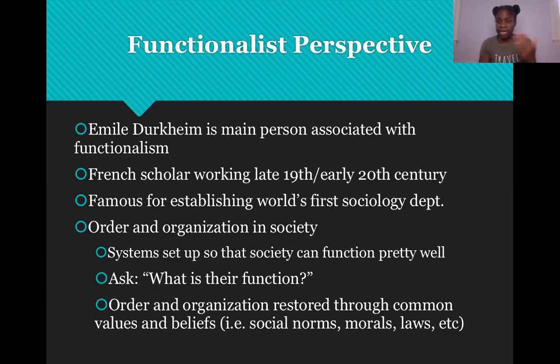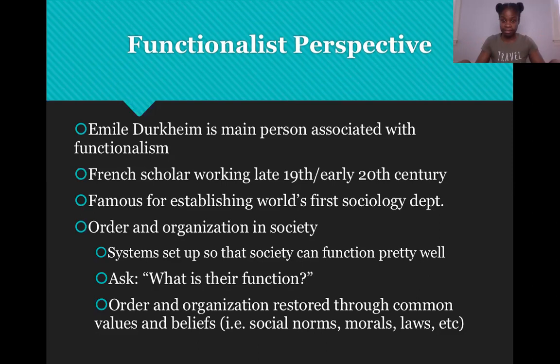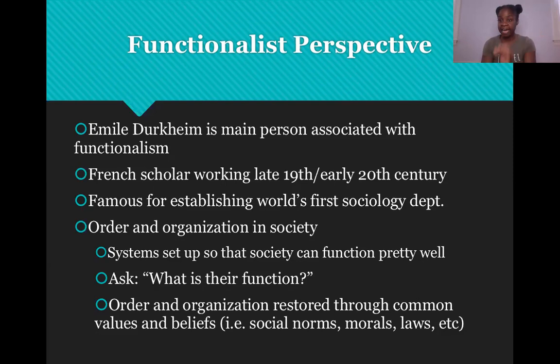When I say systems, I'm talking about educational systems, family systems, religious systems, and state systems — meaning policies and laws. These things keep society ordered and organized. Order and organization is restored through common values and beliefs. Because people are flawed, these systems are set up so that society can function well and maintain order.